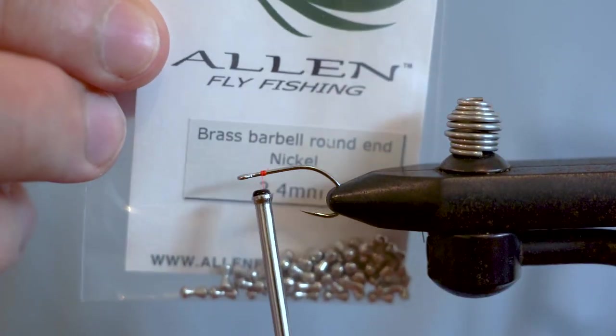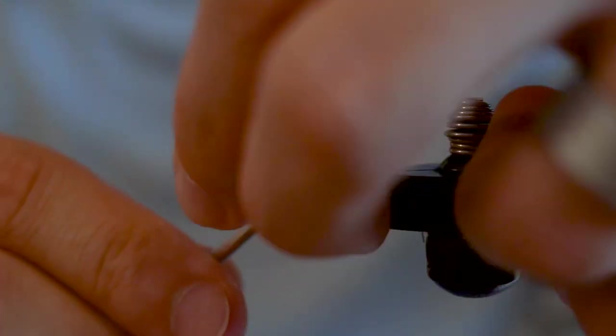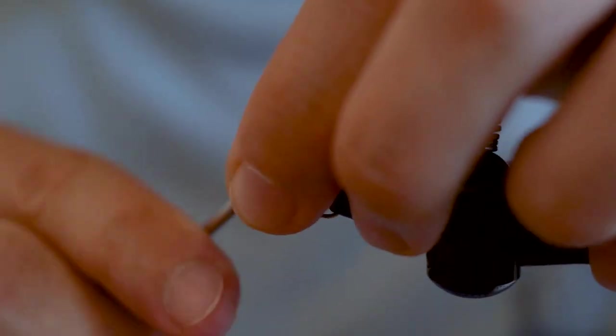Now we're going to tie in a 2.4 millimeter brass barbell eye. Don't crowd the eye of the hook too much when you're adding in this weighted eye as you want to be able to fit in some extra materials there at the end.